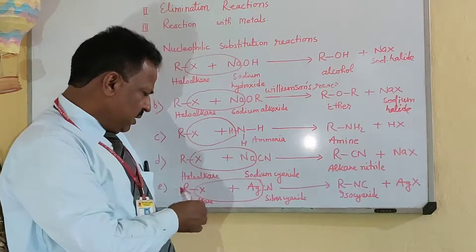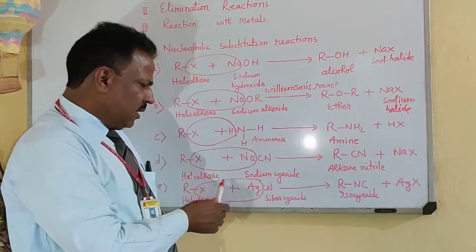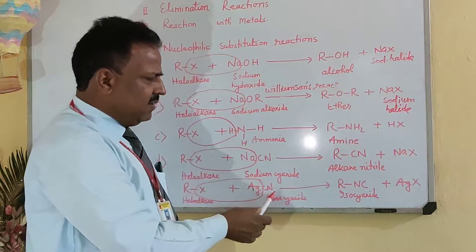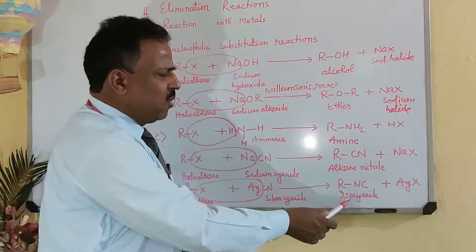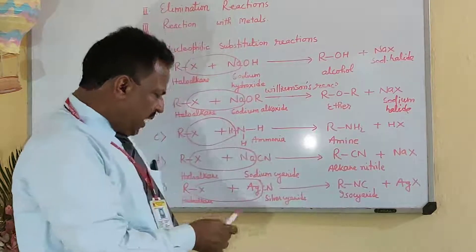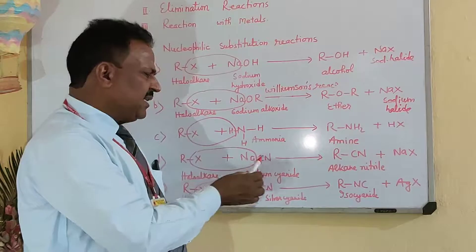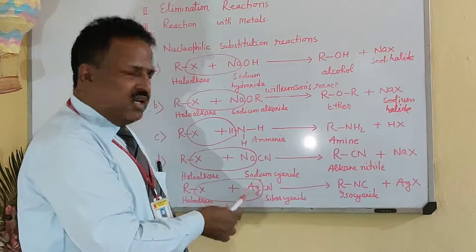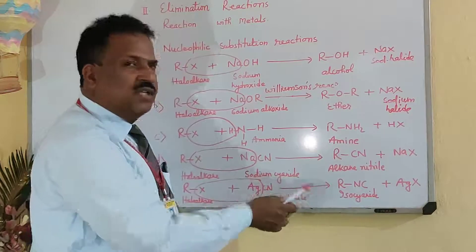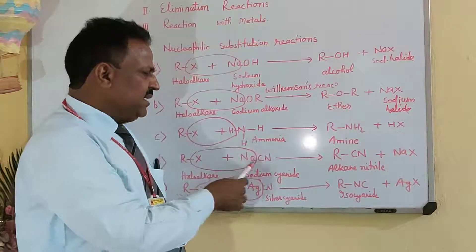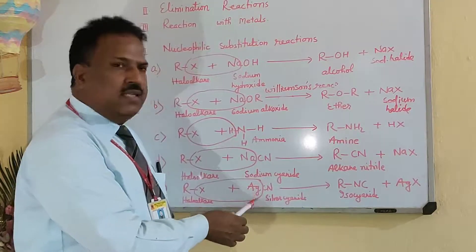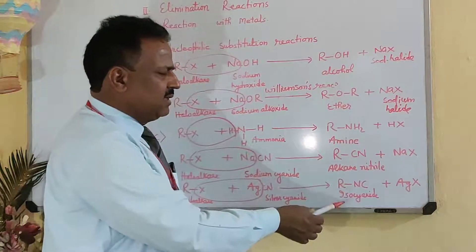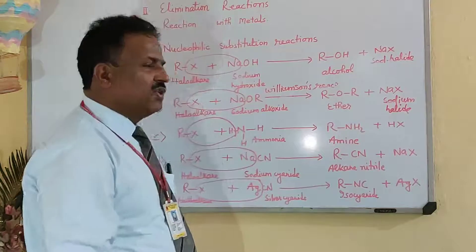When haloalkane combines with silver cyanide (AgCN), then isocyanide is formed. Why does it react with NaCN to form cyanide, and with AgCN to form isocyanide? Because NaCN is ionic and AgCN is covalent, so isomerization occurs and the product is isocyanide.